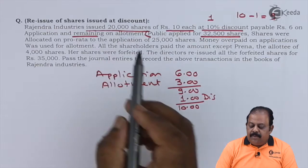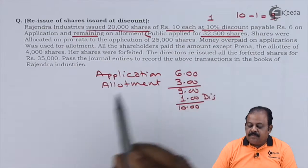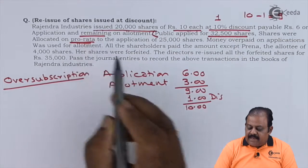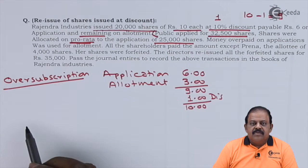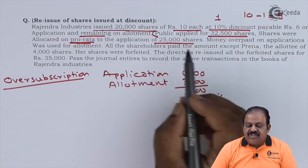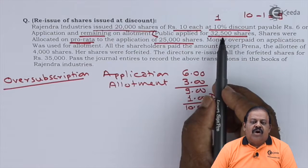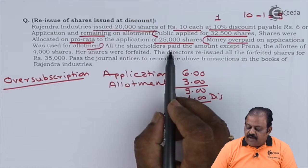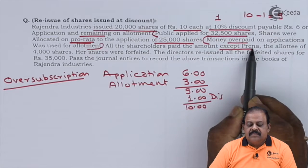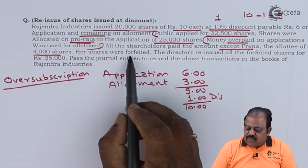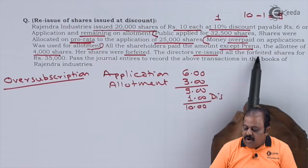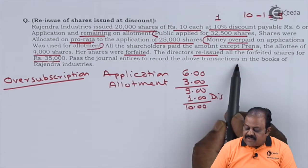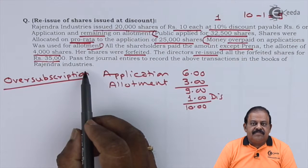Public applied for 32,500 shares. The issue size is 20,000 shares, so this is a situation of oversubscription. Shares were allotted on pro-rata to applicants of 25,000 shares. Money overpaid on application was used for allotment. All shareholders paid except Prerana, the allottee of 4,000 shares — her shares were forfeited. The directors reissued all forfeited shares for ₹35,000.